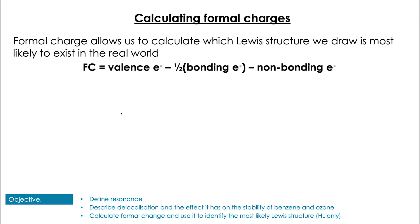Now I'm going to look at a HL only component: calculating formal charges. Formal charges help us quantify if the Lewis structure we have drawn is more or less likely than another Lewis structure that may equally be drawn for a given molecule. The formula is: take the number of valence electrons for a given atom, subtract half of the bonding electrons, and then subtract the number of non-bonding electrons, and that gives us the formal charge.